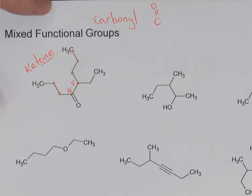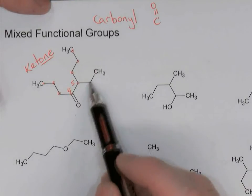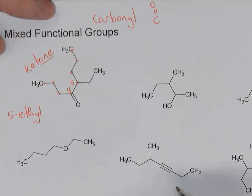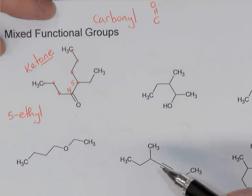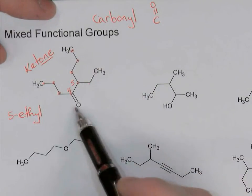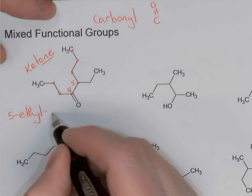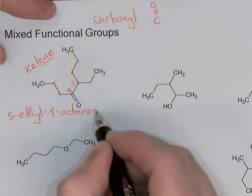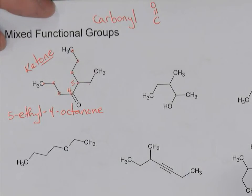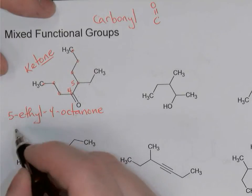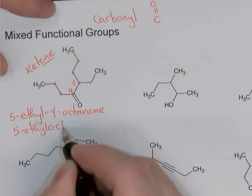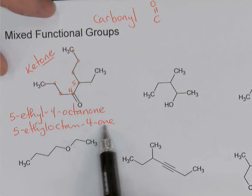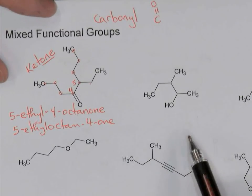I notice there's a branch over here with two carbons in it, at carbon number five in my parent chain. A two-carbon branch is an ethyl branch. This was an eight-carbon parent chain, so my immediate thought is octane. But because of this carbonyl making it a ketone, the name is 5-ethyl-4-octanone — we took octane, dropped the E at the end, and added ONE. The IUPAC name would be 5-ethyl-octan-4-one, putting the four right before the suffix ONE.